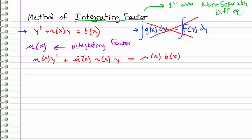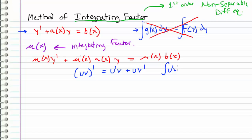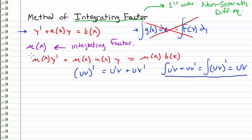Multiplying through by a function actually lets us take advantage of the product rule from calculus. Recall the product rule: if we have two functions u and v and we take the derivative, this is equal to u prime times v plus u times v prime. So the integral of u prime times v plus u times v prime equals u times v. We're going to use this fact to integrate the left-hand side of our equation.